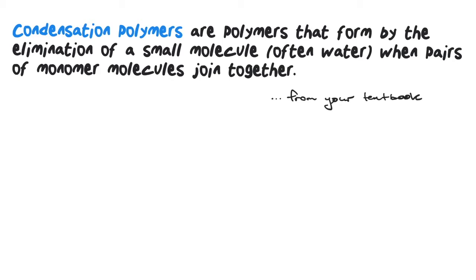Condensation polymers are made from monomers that have two different groups of atoms that can join together. If there's only one reactive group the chain will terminate. If there are two reactive groups a linear chain will form. If there are three or more this usually results in a three-dimensional cross-linked polymer.